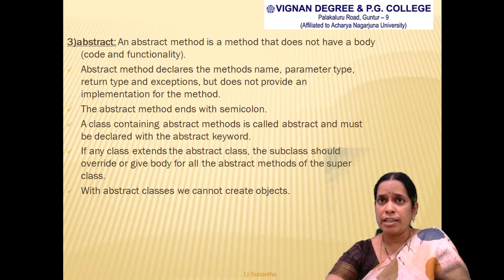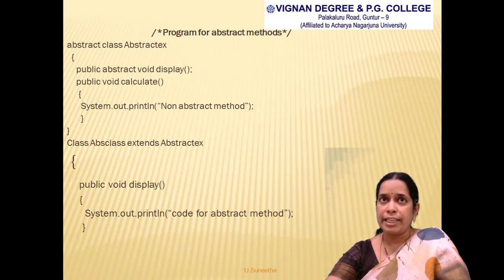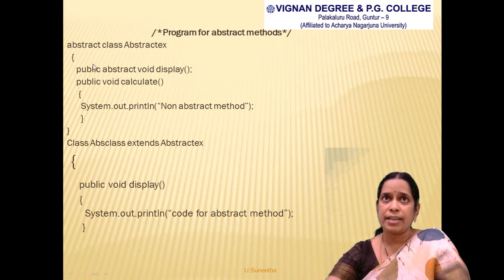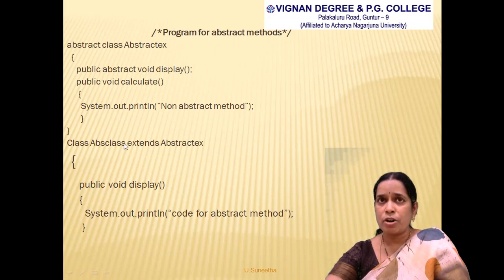For abstract classes, it is a rule that no objects can be created. In the example, the first class contains an abstract method and is declared with the 'abstract' keyword before the class name. The second class 'AbsClass' extends the first class ('AbstractEx'), inheriting all its properties. AbsClass has its own 'display' method with the statement System.out.println('Code for abstract method').